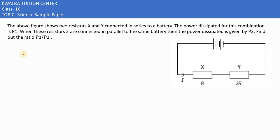Here in this case, it says the above figure shows two resistors X and Y connected in series. They are saying the power dissipated for this combination is P1. If we are in series, how much power dissipation is P1?